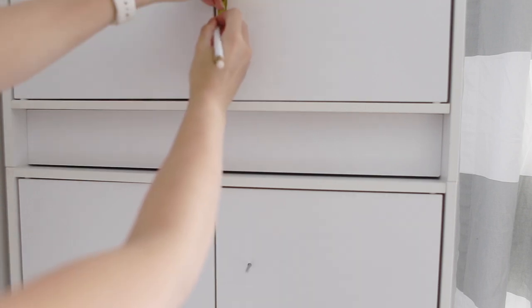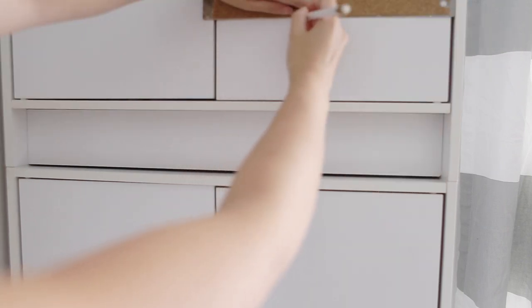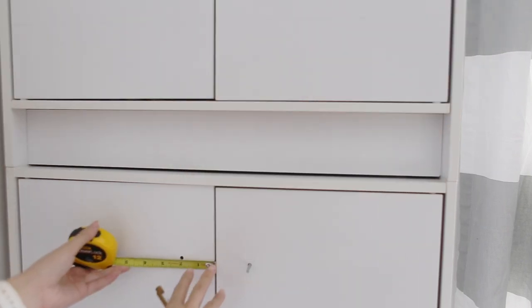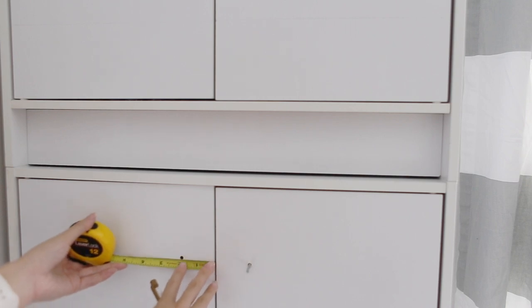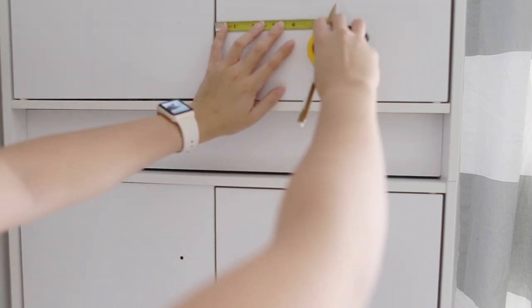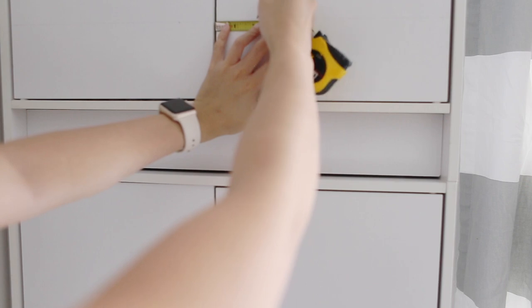Now we're gonna go ahead and mark that same distance on the top, so that way we can draw a line across. Next, we're gonna measure the distance from the middle of the cabinet, so we can duplicate that on the top, and we know where on that line we're gonna actually drill the hole.